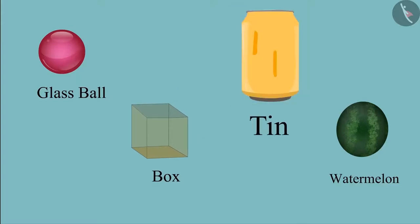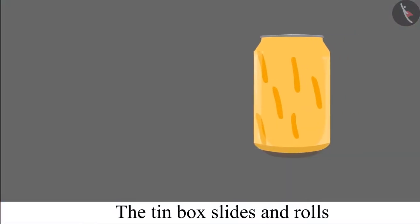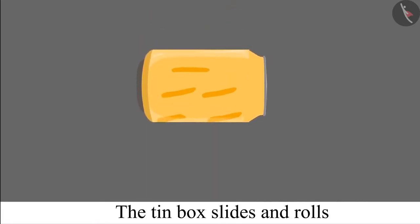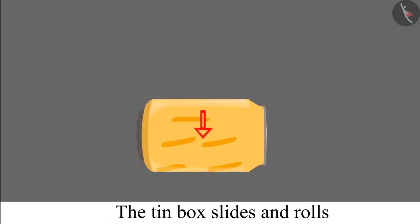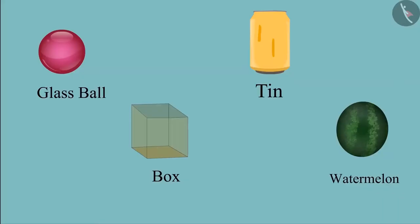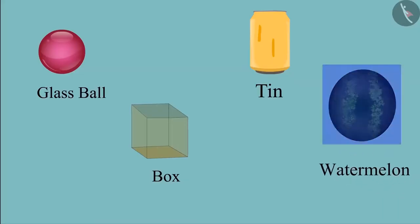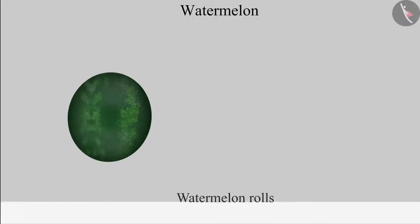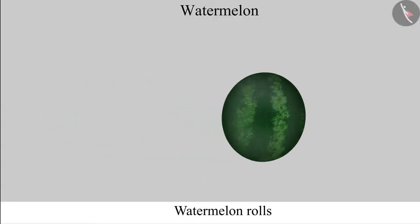Now let us see this tint box. It can slide because it has one surface which is not round. And it can also roll because it has a round surface also. And children, this is a watermelon. It is round, which means it will roll.